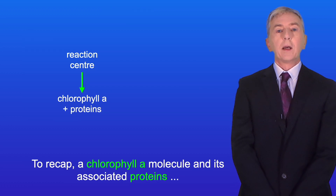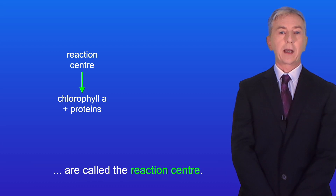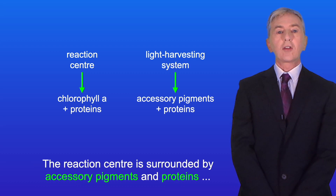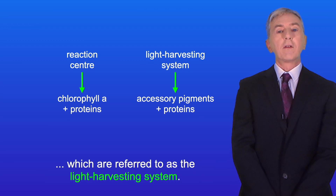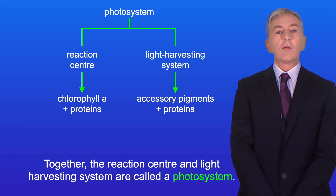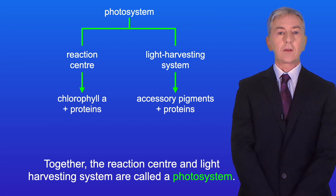To recap: a chlorophyll A molecule and its associated proteins are called the reaction center. The reaction center is surrounded by accessory pigments and proteins which are referred to as the light harvesting system. And together the reaction center and light harvesting system are called a photosystem.